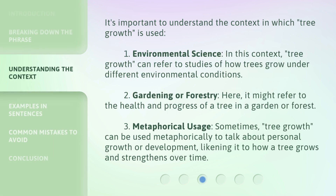It's important to understand the context in which 'tree growth' is used. 1. Environmental Science: in this context, 'tree growth' can refer to studies of how trees grow under different environmental conditions. 2. Gardening or Forestry: here, it might refer to the health and progress of a tree in a garden or forest. 3. Metaphorical Usage: sometimes, 'tree growth' can be used metaphorically to talk about personal growth or development, likening it to how a tree grows and strengthens over time.